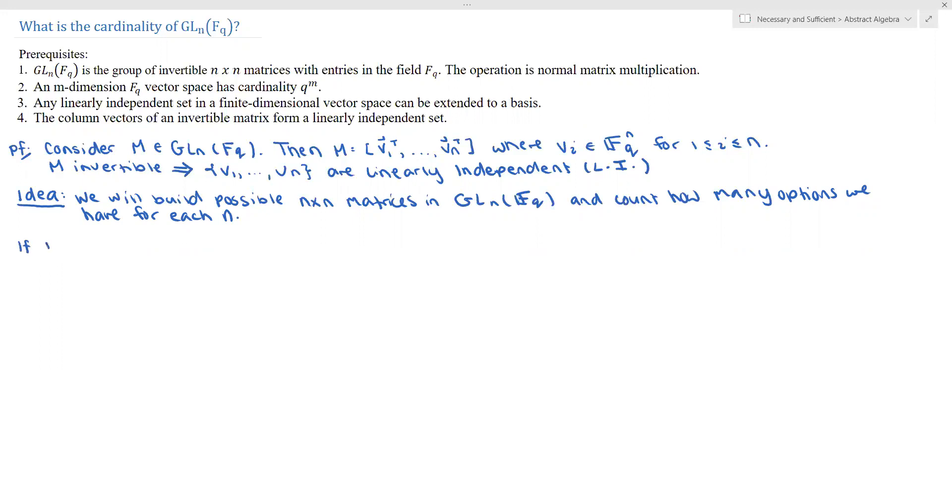So if n is equal to 1, then M is just a singleton. It's a 1 by 1. So then we have M is equal to V1. And further, we know this is invertible. So if we just look at the vector V1, this is a linearly independent set. So we have a singleton vector.